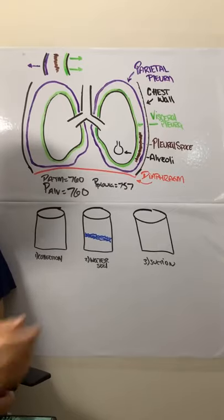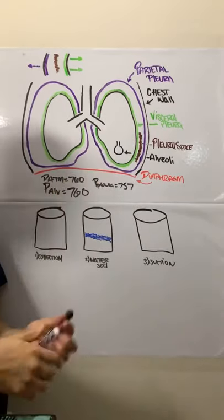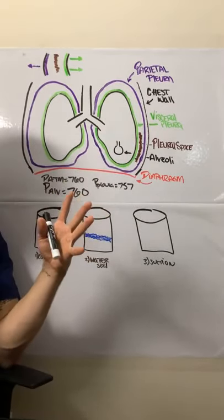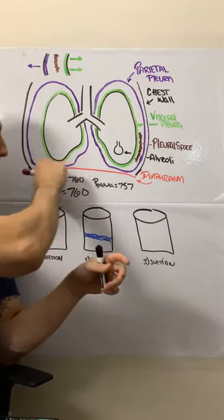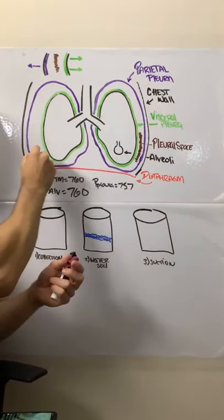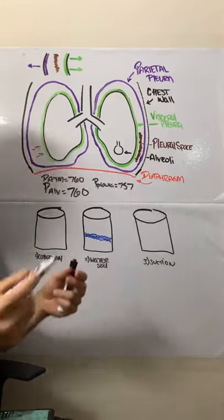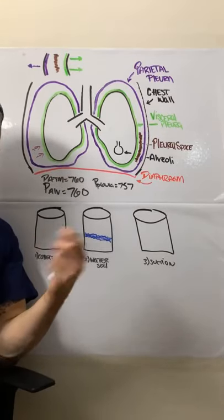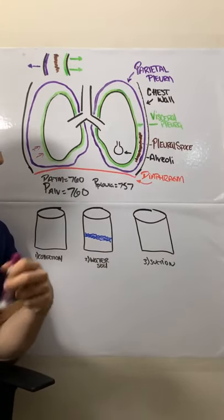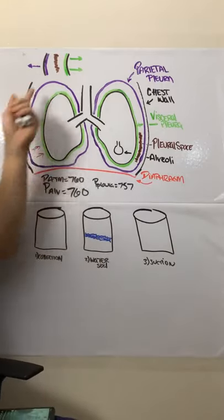And then the pressure in the pleural space is actually about 757. It's slightly lower than the pressure in the alveoli. And so the first thing we need to address is, why is that the case? It obviously has to be a little bit lower than the pressure in the alveoli in order to keep the lung expanded, because if the pressure inside this pleural space were higher, it would cause a lung collapse, which is what happens when you have the pneumothorax, hemothorax, whatever else.